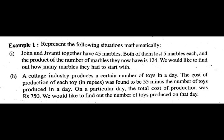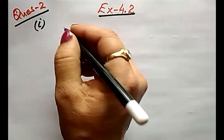Part 1 is, what is given to you? John and Jeevanthi together have 45 marbles. Both of them lost 5 marbles each. Both children have 45 total. From them, 5 marbles each were lost.